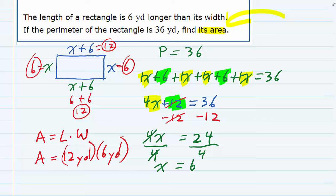And multiplying, we get area equals 12 times 6, or 72. And yards times yards gives us yards squared. So our area for this rectangle is 72 yards squared.